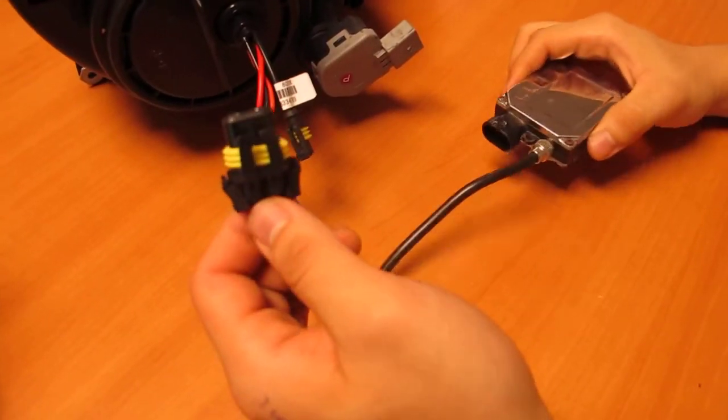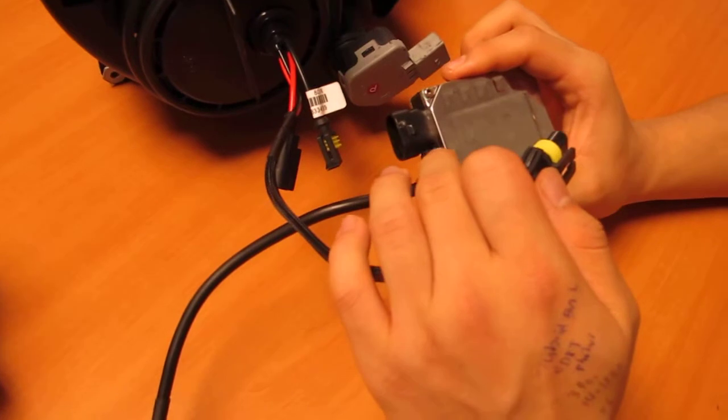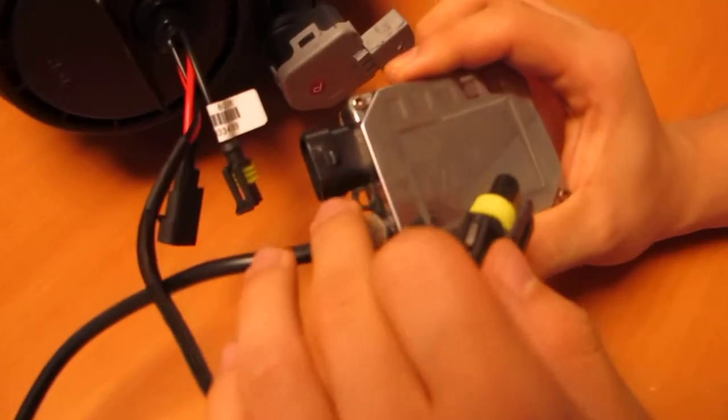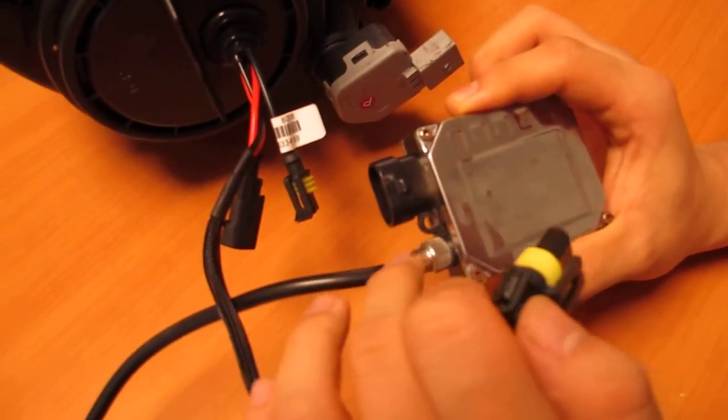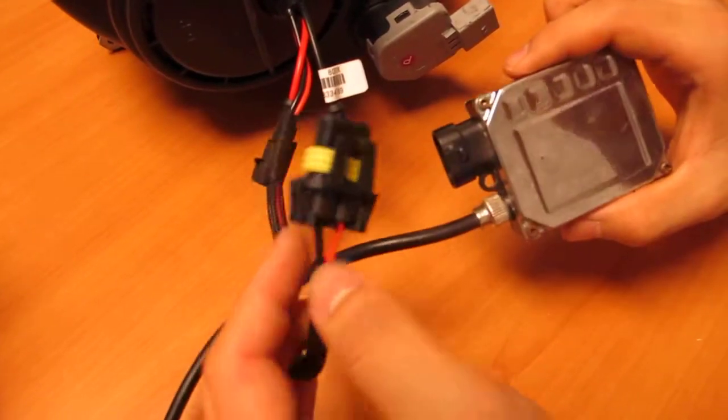This is actually a 9006 connector which will go to your ballast. Please take notice that your ballast will have engravings for positive and negative. This type of ballast doesn't have the engraving so we understand that the inner pin will be the positive one. Make sure that the red meets with the inner side positive for this ballast.